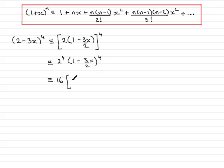So, that's going to be 1 plus n, n being 4, times the x term, which is -3x/2. Then it's going to be plus n times (n - 1), so that's going to be 3, all over 2 factorial, so that's 2 times 1, times the x term all squared, so the x term is -3x/2. Don't forget to put it always in brackets, and it's squared.